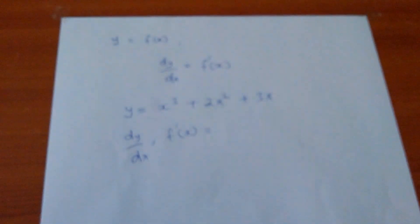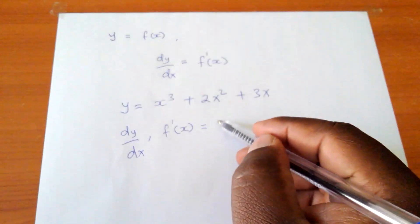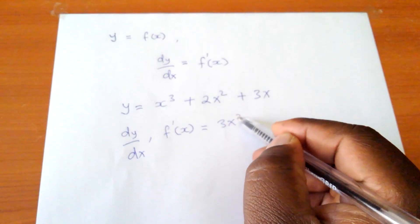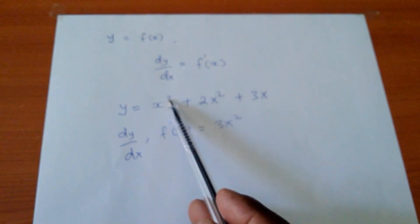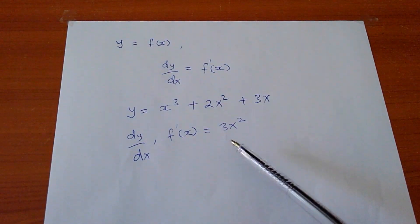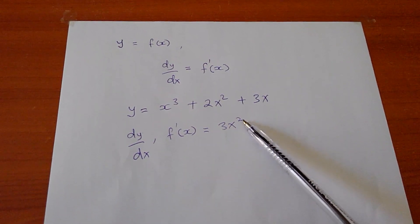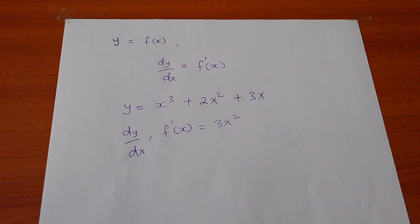This will become 3x². I've brought the 3 in front of x, then I subtracted 1 from the power 3, then I remain with the 2. That's how I came across with that.